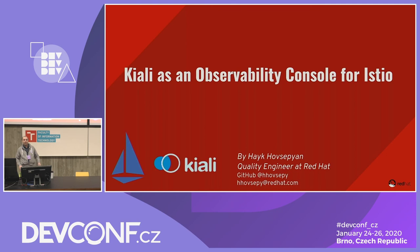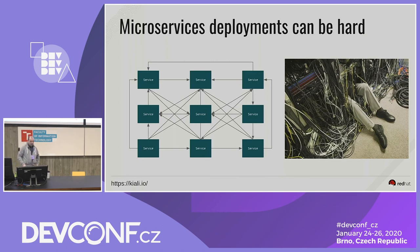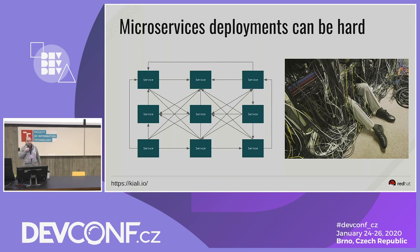How many of you are familiar with Istio or heard about it? Quite a lot of people. So let's have a brief introduction of microservices and Istio and then move to Kiali. The industry is moving from big monolithic applications into smaller units called microservices deployed into containers. The main idea is to split big services into smaller ones with independent lifecycle, workloads, and deployment pipeline, and container technologies provide this model.